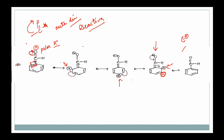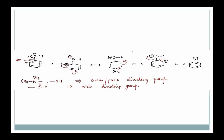Why deactivating? Because this group is withdrawing electron density from our benzene ring, making it less reactive toward electrophilic attack. Groups which make our benzene more electron-rich are called activating groups. Groups which make our benzene ring electron-deficient deactivate it and are known as deactivating groups. Now let me give one more example. I have put OH on benzene. You know this has a lone pair of electrons — you need to know the resonance conditions.